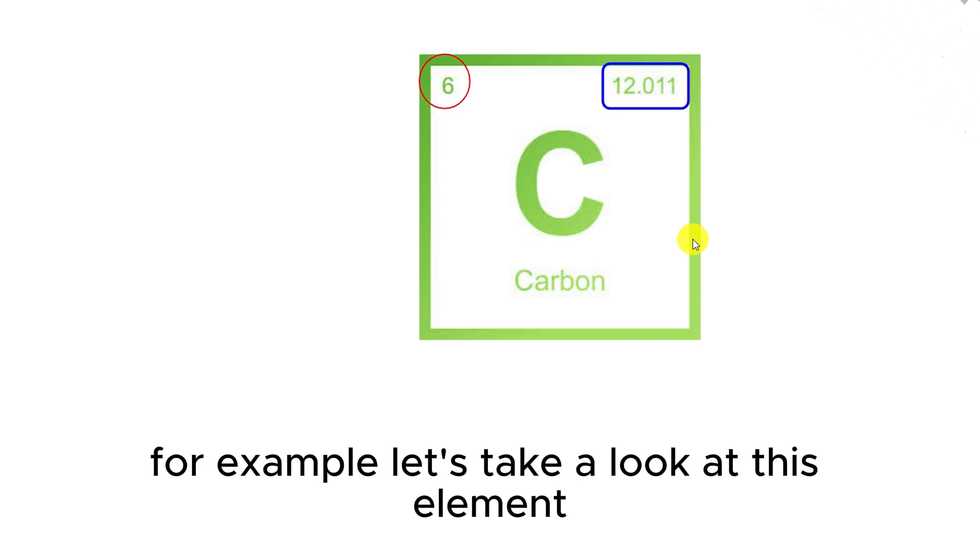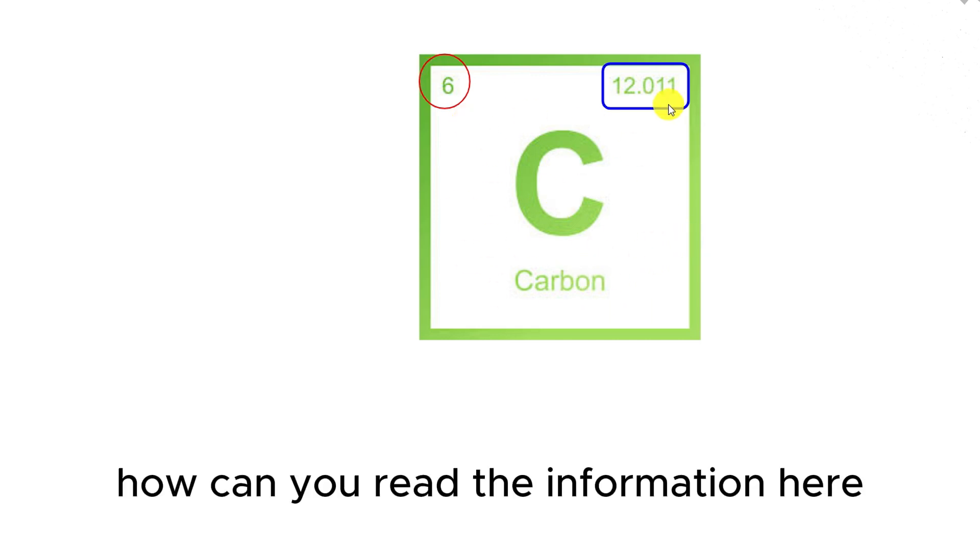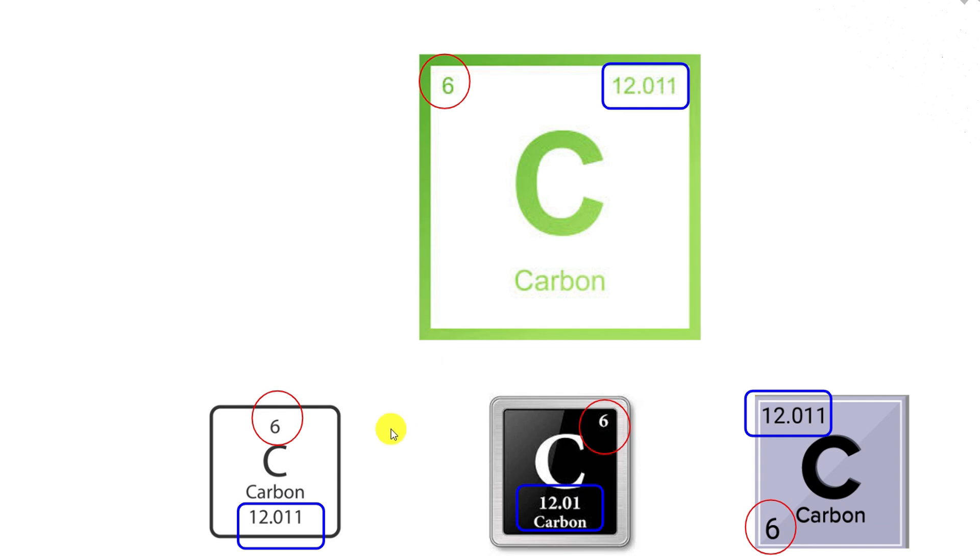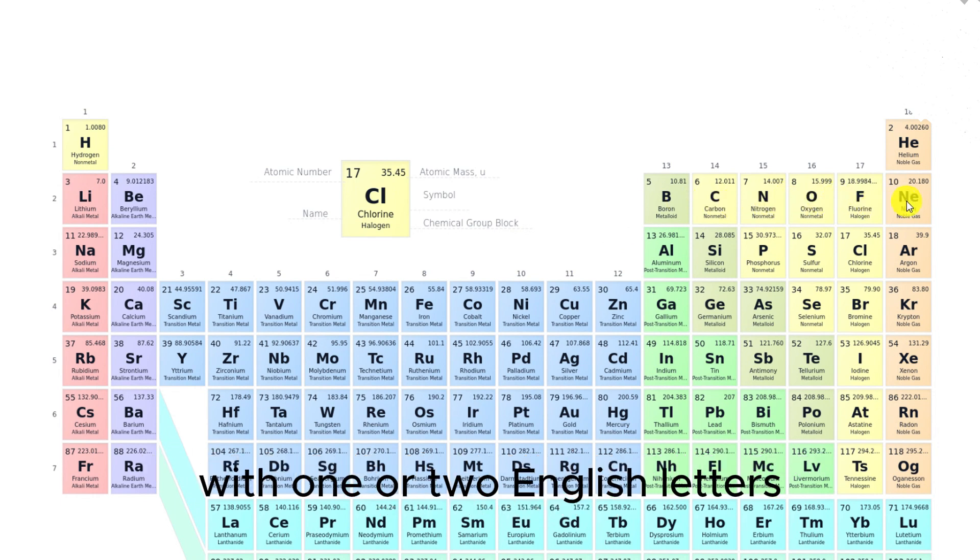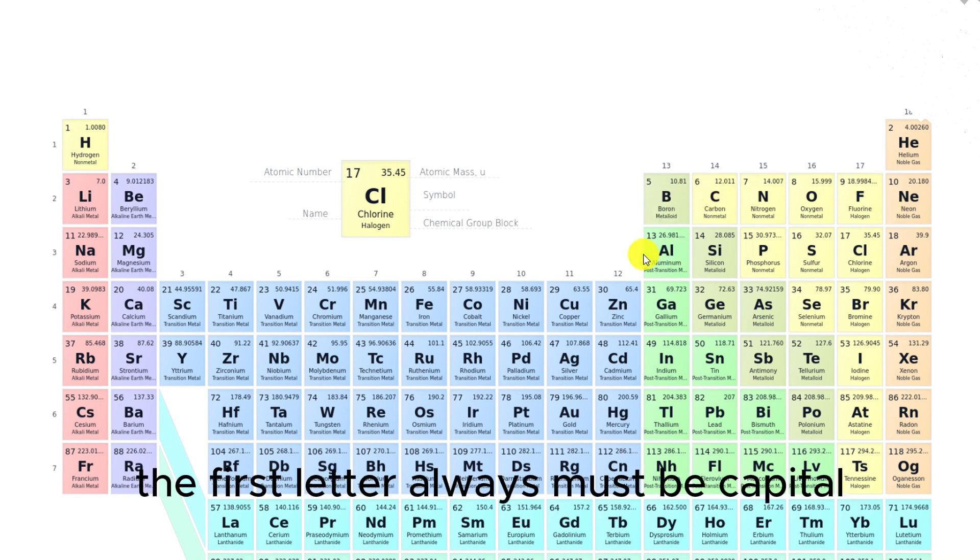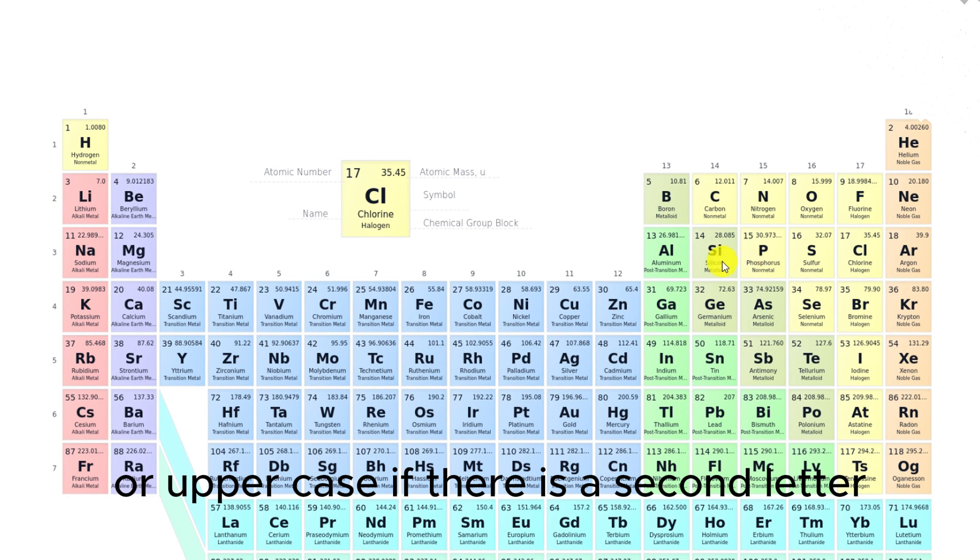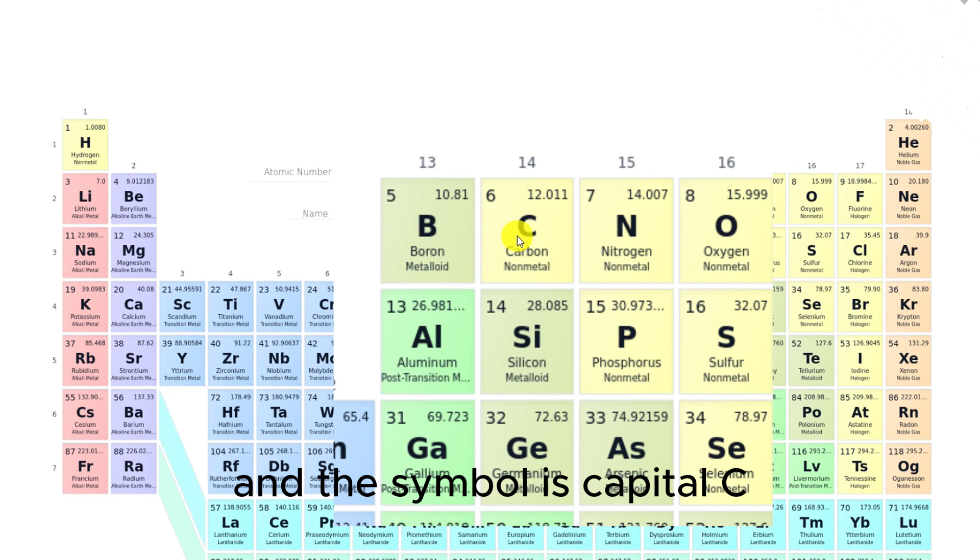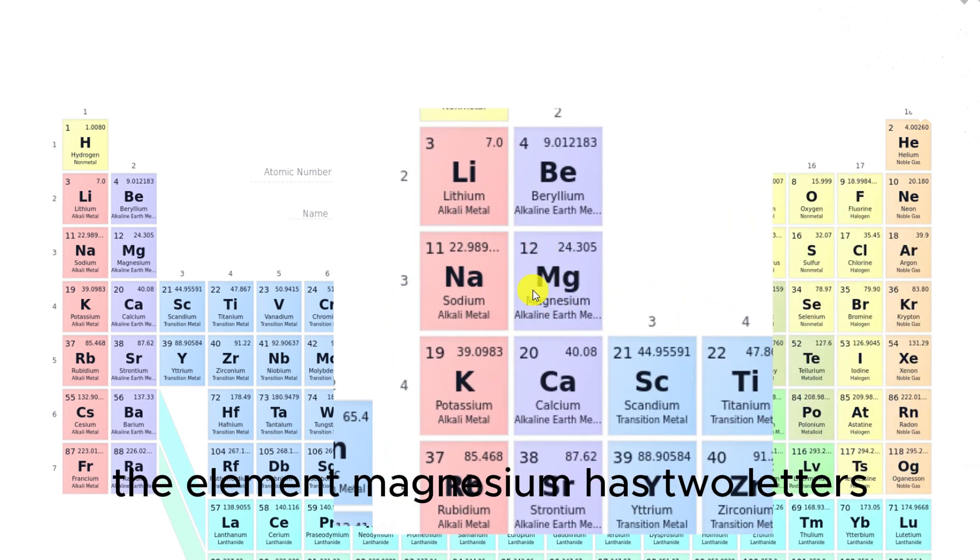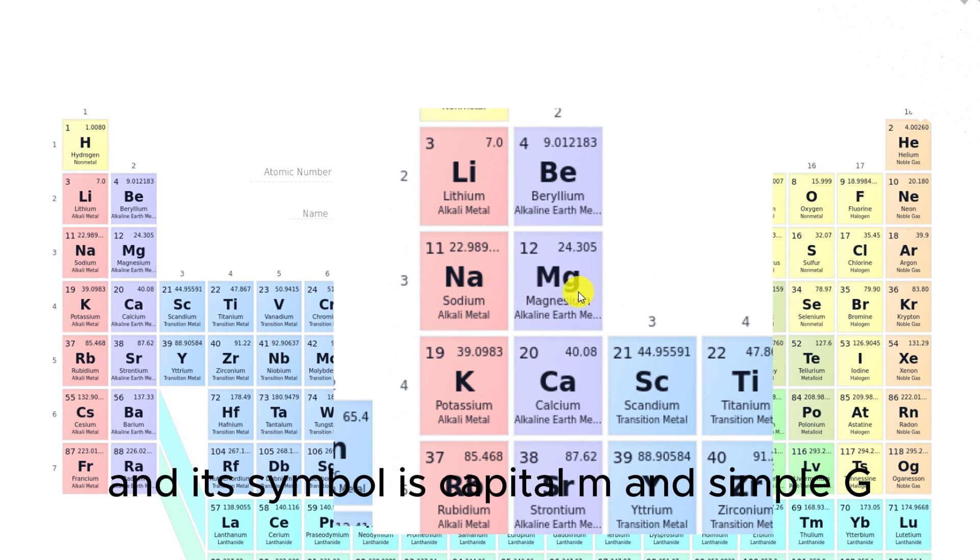For example, let's take a look at this element. How can you read the information here? We must remember that the depiction of atoms in the periodic table can change according to the publisher. In the centre, we have the symbol of each element with one or two English letters. The first letter always must be capital or uppercase. If there is a second letter, it always must be lowercase. For example, the element carbon has only one letter, capital C. The element magnesium has two letters, capital M and simple G.